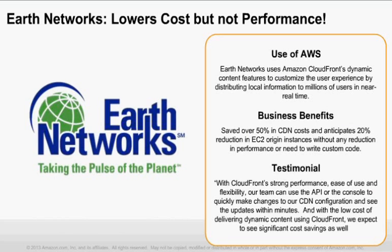Earth Networks also uses CloudFront's dynamic content features to customize the experience of their end users by distributing local information such as weather data customized to their viewers locally in near real time. Weather is truly a dynamic set of data that can change very frequently, and especially during weather alerts or storms, being able to serve content as quickly as possible becomes critical for their business. With Amazon CloudFront, they saw a 50% reduction in their CDN costs from their previous provider, with no reduction in performance after switching, and CloudFront was much easier to use as they did not need to write or maintain any custom code.